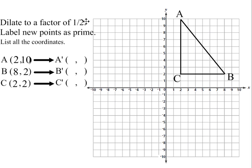Now we have to dilate to a factor of a half. So we are basically multiplying each x and y by a half, or dividing by 2. Half times 2, or half of 2, is 1.